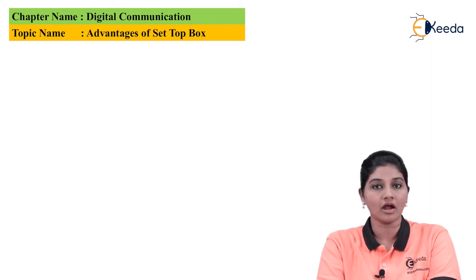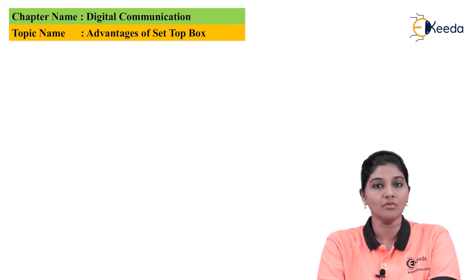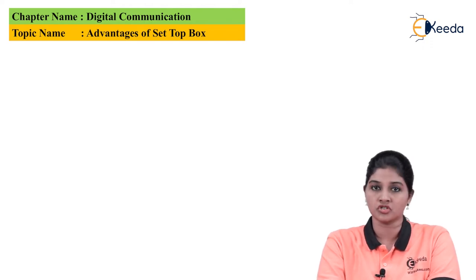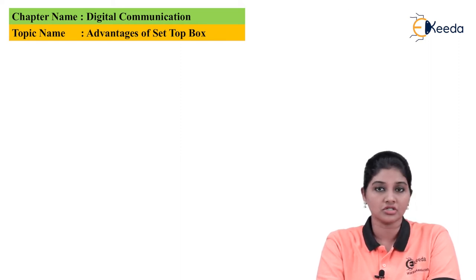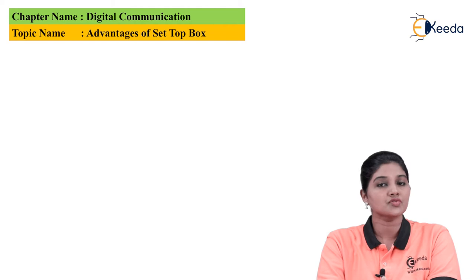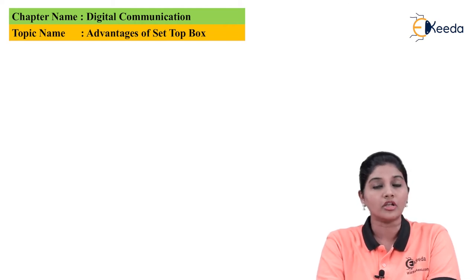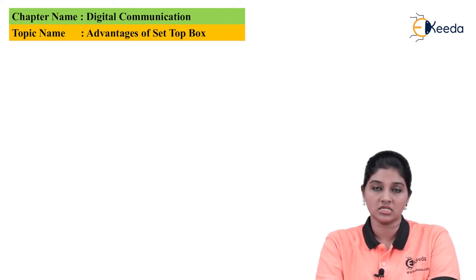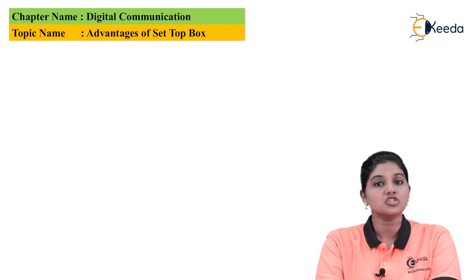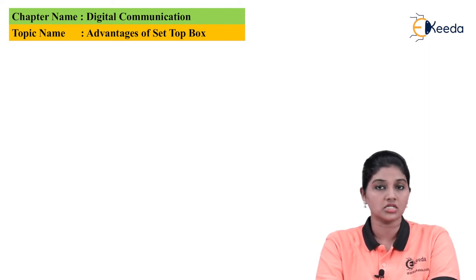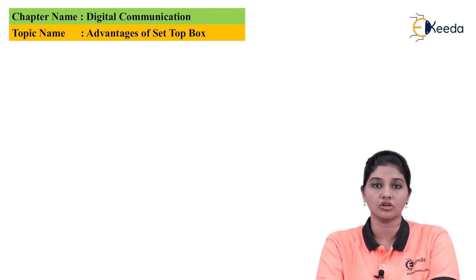So basically, a set-top box is a hardware device which is used for the conversion of digital signal into analog form. At the same time, it performs the function of reception, demodulation — that is decoding of the signal — and conversion of the signal. The set-top box is also called a current converter or a digital converter. The different types of set-top box are available in the market, and depending upon the environment in which the set-top box is going to be used, the required set-top box is selected. The advantage of set-top box is that the number of channels on the television system are less as compared to the number of channels on the set-top box.